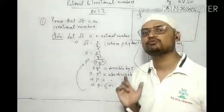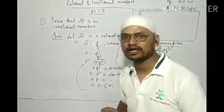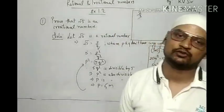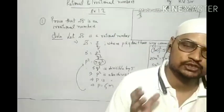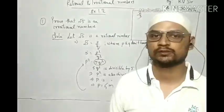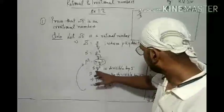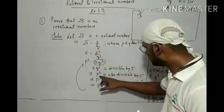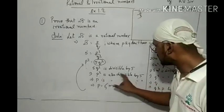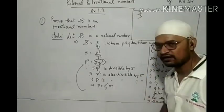Since 5q squared is divisible by 5, p squared is also divisible by 5. It implies p squared is also divisible by 5.